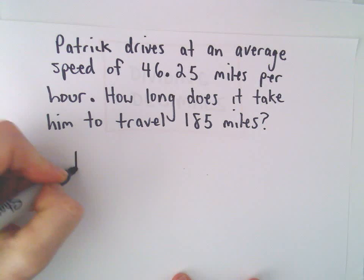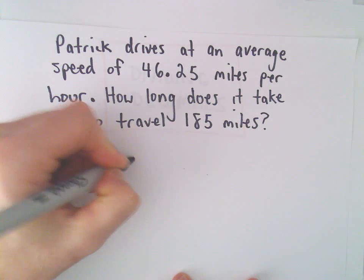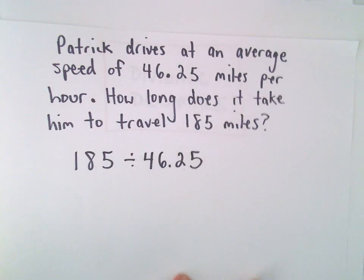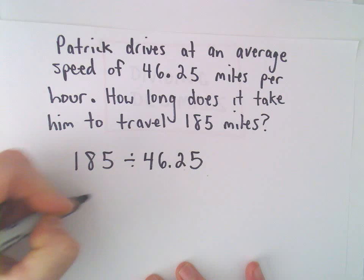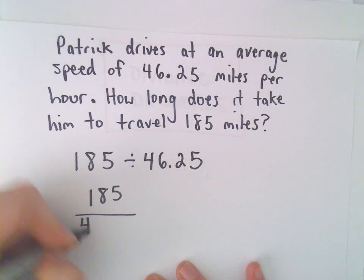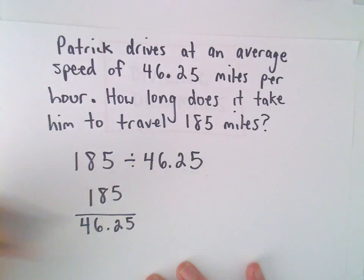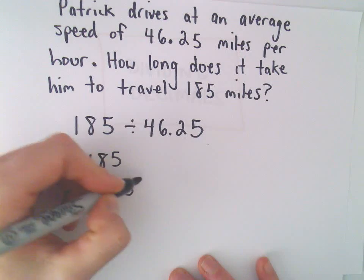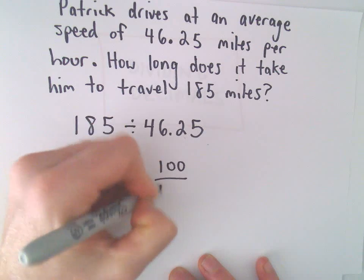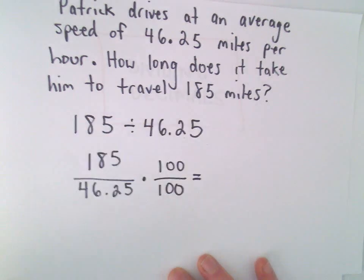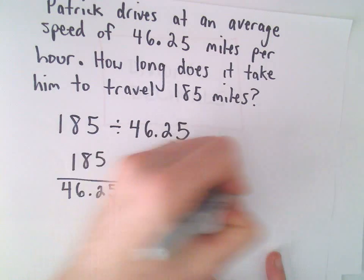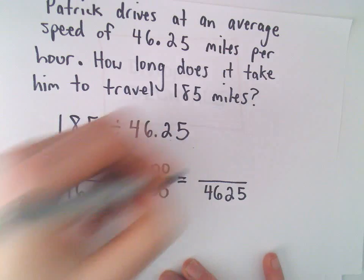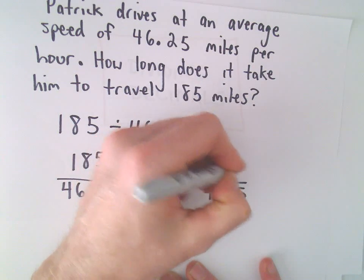Well, all we're going to have to do is take 185 and divide it by 46.25. Or equivalently, we'll do 185 over 46.25. And now I'm going to do the same thing as before. I'm going to multiply top and bottom of my fraction by 100 to move the decimal. And the denominator will be left with 4625. And the numerator will be left with 18500.